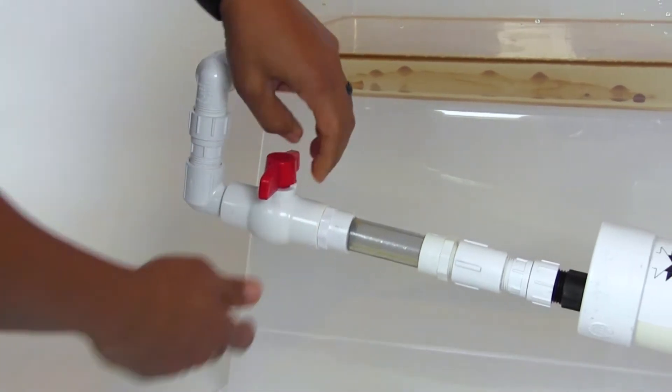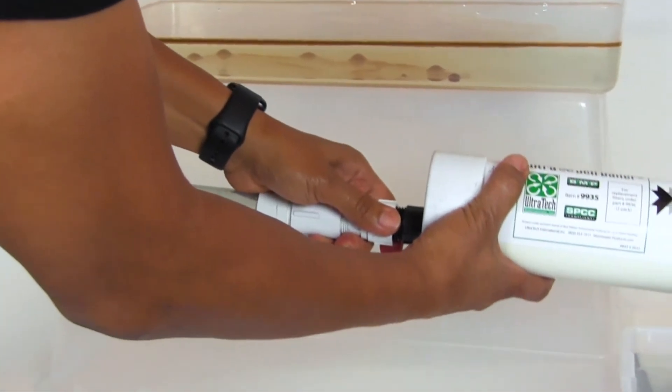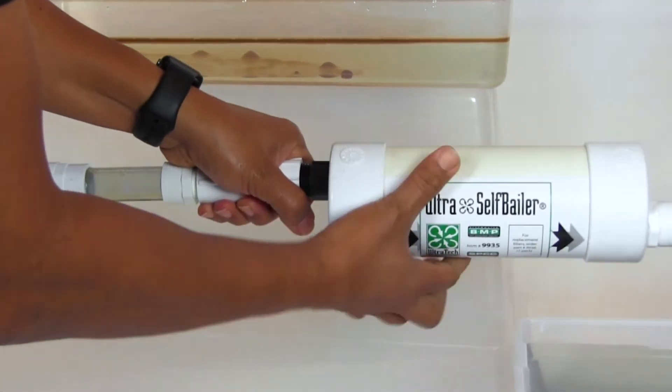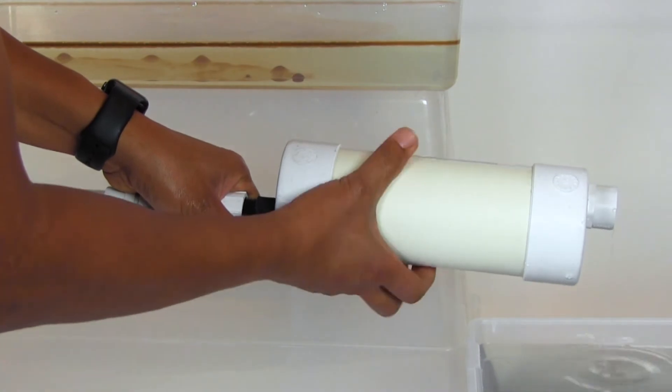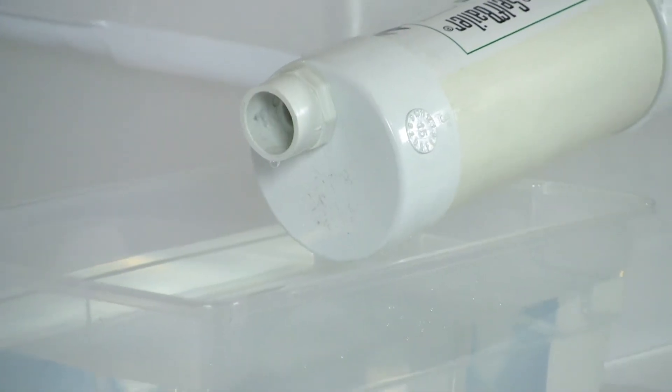A shutoff valve is installed to manually cut off flow through the Ultra Self Baler. This valve can be used when changing out filter cartridges, a spill is witnessed, or any time the flow needs to be stopped.